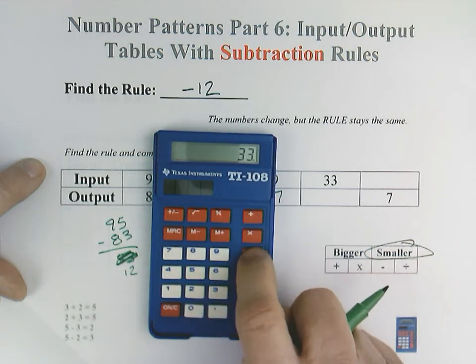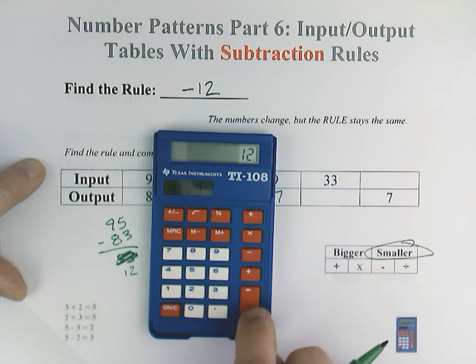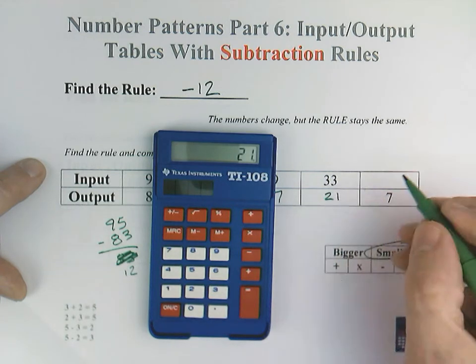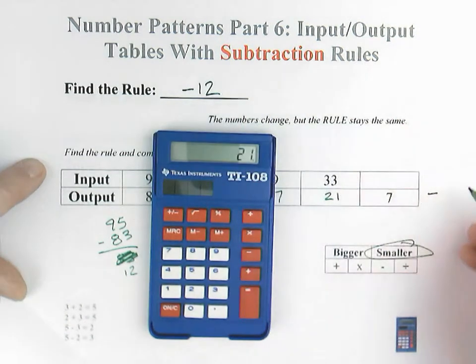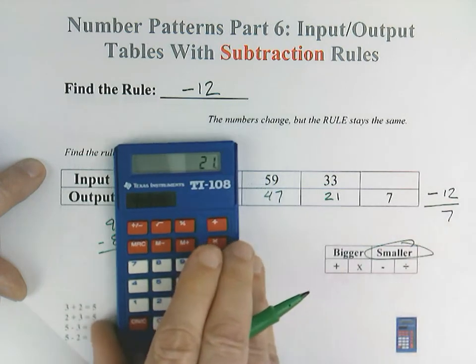59 minus 12 equals 47. 33 minus our rule of 12, minus 12 equals 21. Here, same idea. It's going to be blank minus 12 will equal 7.